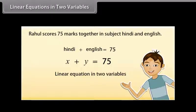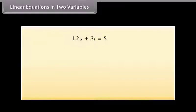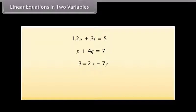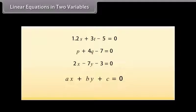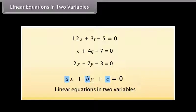Some other examples of linear equations in two variables are: 1.2S plus 3T is equal to 5; P plus 4Q is equal to 7; and 3 is equal to 2X minus 7Y. We can put these equations in the form: 1.2S plus 3T minus 5 is equal to 0; P plus 4Q minus 7 is 0; and 2X minus 7Y minus 3 is 0. So any equation which can be put in the form AX plus BY plus C is equal to 0, where A, B, and C are real numbers and A and B are not both zero, is called a linear equation in two variables.